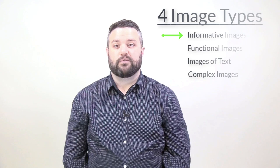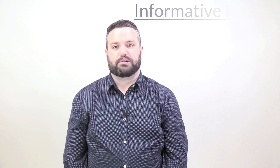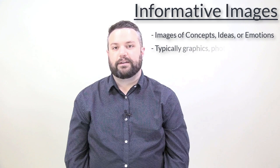There are seven different types of images as defined by the World Wide Web Consortium. The GVSU CMS is concerned with the following four types: informative images, functional images, images of text, and complex images. Informative images are images that represent concepts, information, or emotions. They are typically graphics, photos, or illustrations. The alt text should be a short description to convey the essential information of the image.